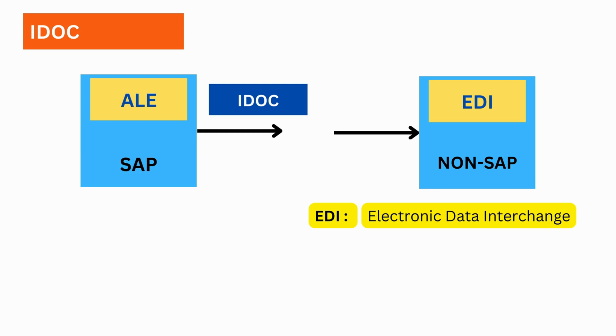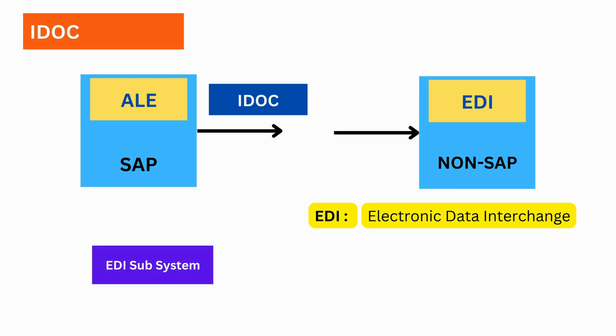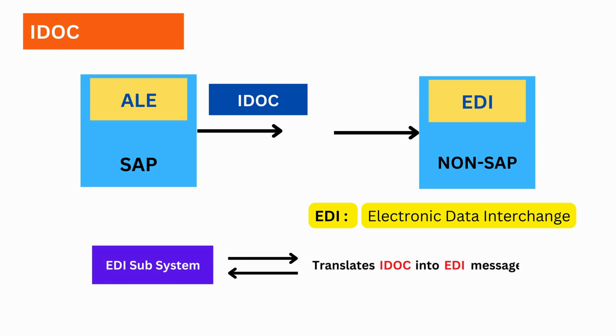For the exchange of data between SAP and non-SAP systems, IDOC uses an EDI subsystem to convert and deliver the data. The EDI subsystem takes care of converting the IDOC to an EDI message.